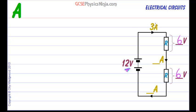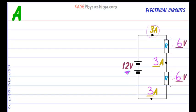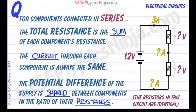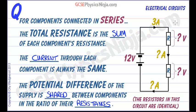So to just complete this diagram, we have three amps flowing here. It is a series circuit. So we must have three amps flowing there and we must have three amps flowing there. So those are key rules for series circuits involving the resistance, the current, and how the potential difference of the battery or the supply is shared between the resistances.